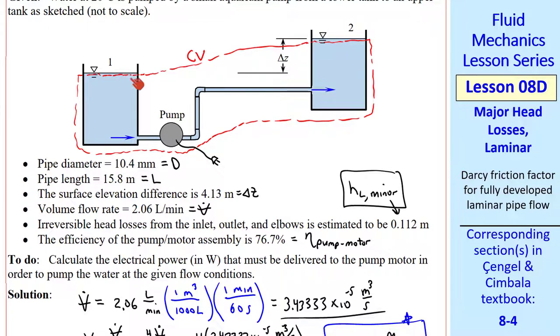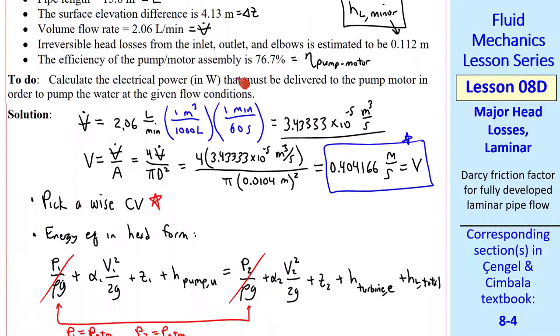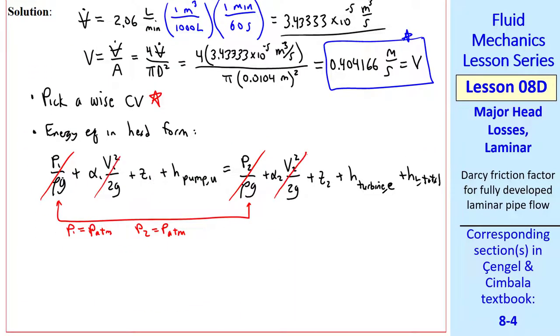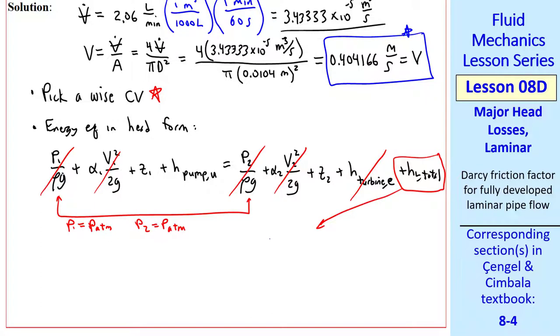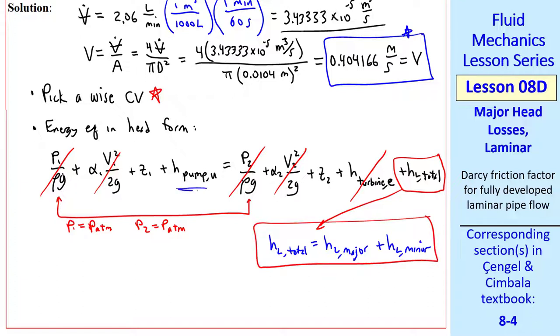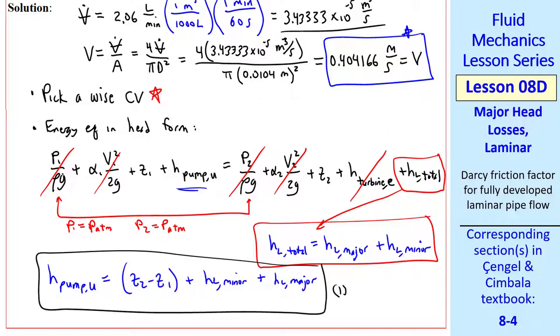We also know that since we picked a wise control volume, the average speed at the inlet is negligibly small assuming that this is a large tank. The same is true at the outlet, so these two terms V1 and V2 go to zero. Keep in mind that V1 and V2 are not the same as V, which is the average speed through the pipe. This is the speed at the inlet and at the outlet, which are negligibly small. We do have a change of elevation and we do have a pump, but there is no turbine in this problem. And as we wrote previously, HL total is HL major plus HL minor. We solve this equation for H pump U, the useful head delivered to the fluid. It's equal to Z2 minus Z1 plus HL minor plus HL major. I'll call this equation 1.